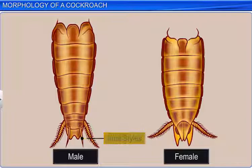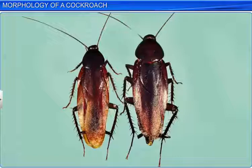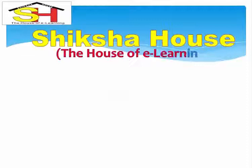Thus, the morphological study of a cockroach includes features such as its color, shape, size, and external organs.